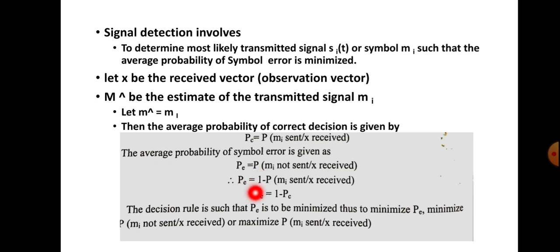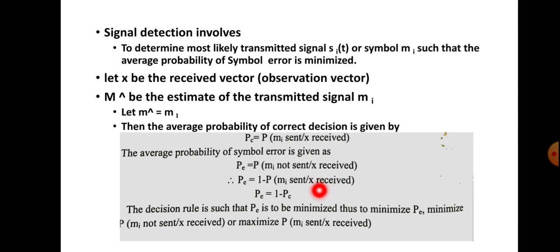The probability of error is equal to 1 minus the probability of correct decision P(Mi sent | X received). In general, we write Pe equal to 1 minus Pc. To minimize the probability of error, we must maximize P(Mi sent | X received), the posterior probability.